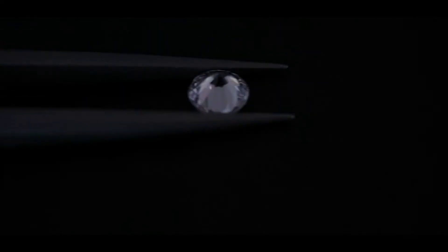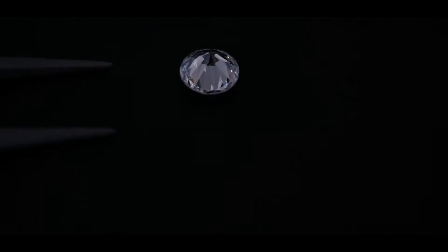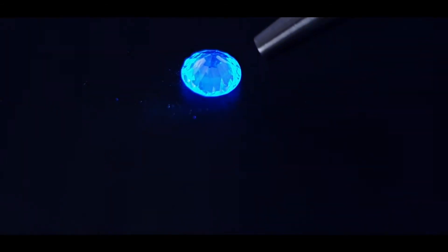For testing a loose diamond, just put it table down on the sampling tray and point the probe towards the pavilion of the stone. It gets a pass, so it's a natural diamond.